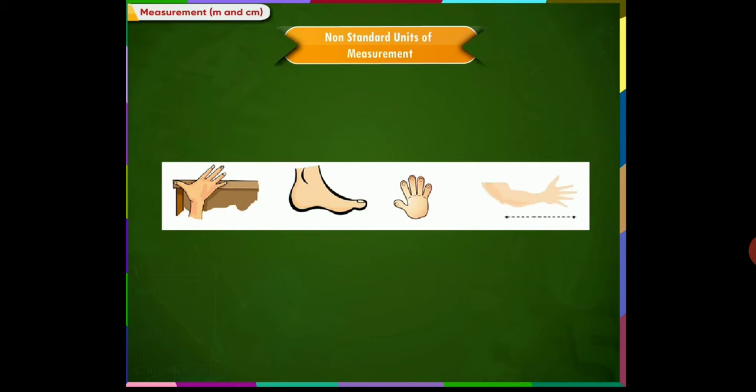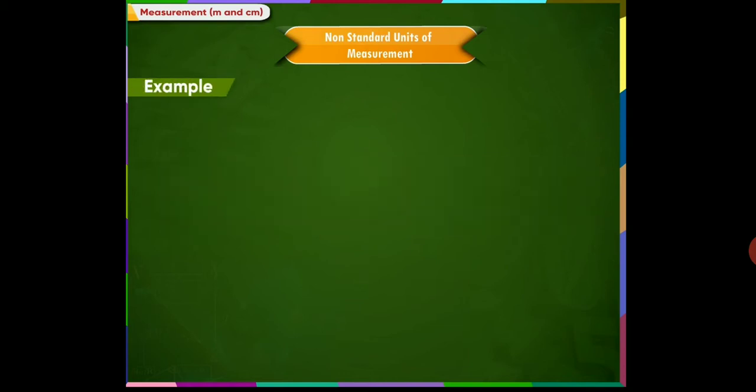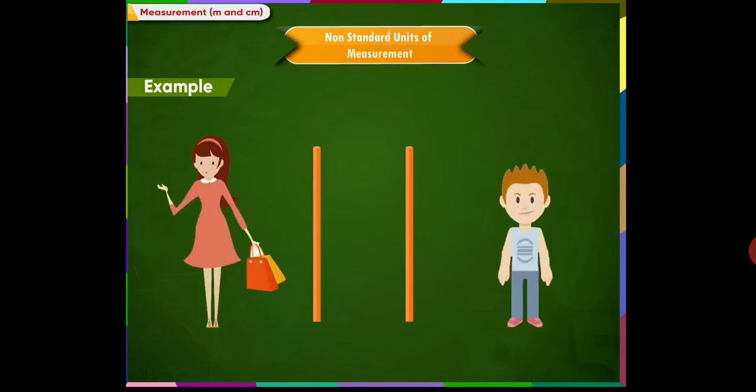Let us take an example. There are two sticks of same length. Meena and Rahul measure the length using their hand span. Meena finds the length of her stick as 5 units and Rahul finds the length of his stick as 7 units. These are two different lengths of the same stick.